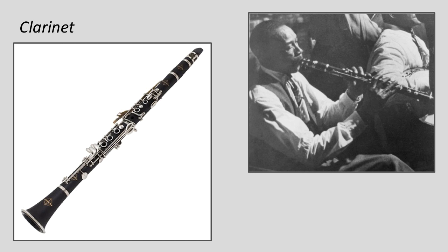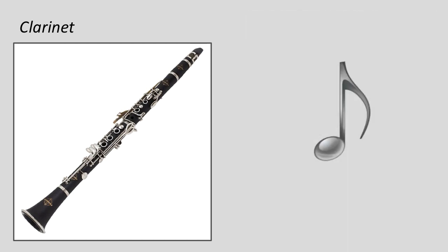As with the flute, the clarinet has distinct sounds in its different registers. Let's listen to another section of Peter and the Wolf and see if we can guess what the clarinet is supposed to represent in this story. I'll give you a hint — it's a pet. Can you guess what animal that was? It's the cat — in fact, it's a very nervous cat who is sneaking around and then gets surprised.